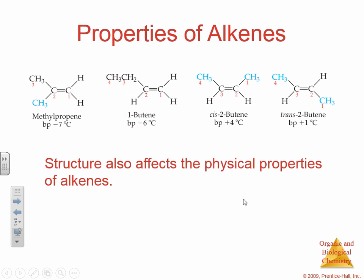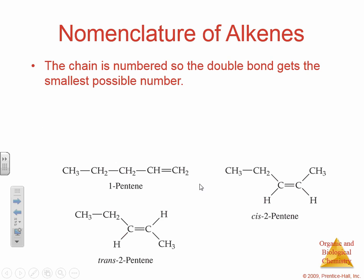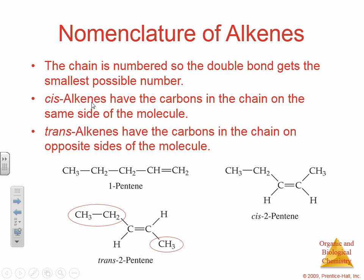That's kind of how trans fats get their name — based on their geometric properties. You can see here we have methylpropene, 1-butene, cis-2-butene, trans-2-butene — three different structures with different physical properties. When naming alkenes, you name where the double bond exists. With five carbons, you start numbering closest to the double bond, so this would be 1-pentene. Cis means alkenes have carbons in the chain on the same side; trans means they're on the opposite side.